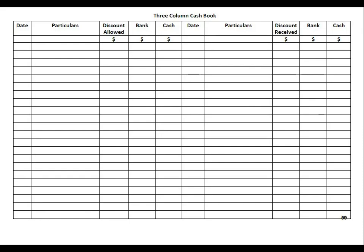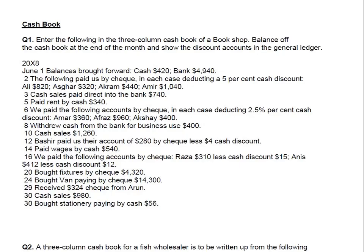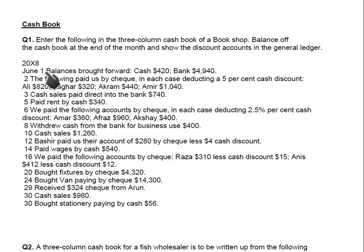The exercise we are discussing today: Question 1 — enter the following in a three-column cash book of a bookshop, balance the cash book at the end of the month, and show the discount accounts in the general ledger. All transactions relate to June 2008. The opening balances brought forward are: cash of 420 and bank balance of 4940.